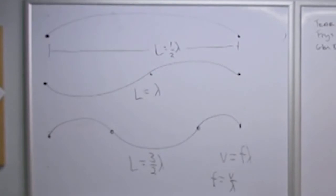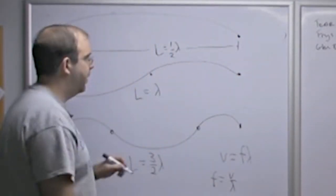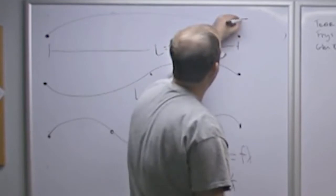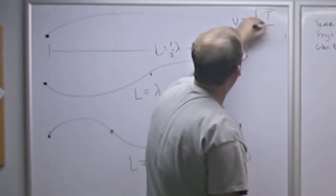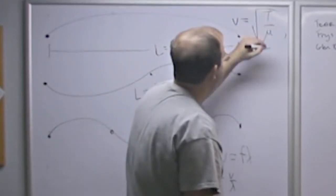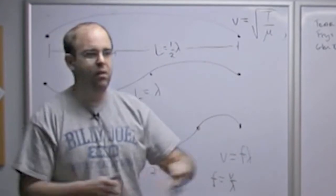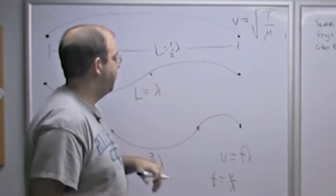So the higher the tension, the higher the wave speed. The larger the gauge, the more massive the string is, the lower the wave speed is. So then there is an equation. I'm not going to derive it, I'll just give it to you.